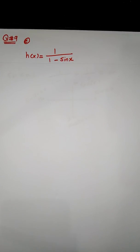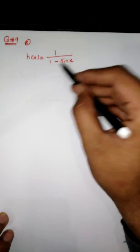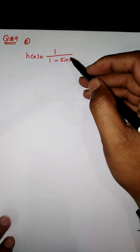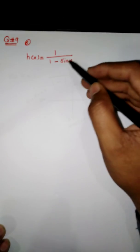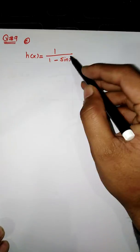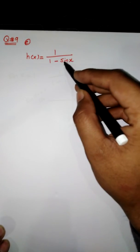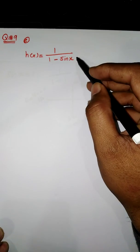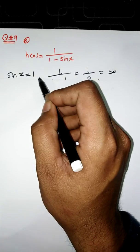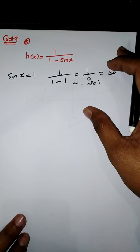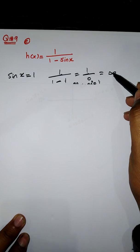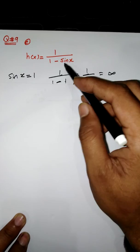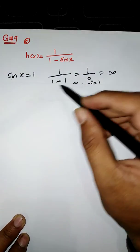In this part we have to find the domain and range of the function h(x) = 1 / (1 - sin x). As we discussed in previous lectures, whenever a fraction appears in a function, the denominator must be non-zero. This denominator will be zero whenever sin x = 1, because 1 - 1 = 0, making 1/0 undefined. So we cannot allow sin x = 1 in our domain.